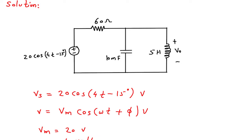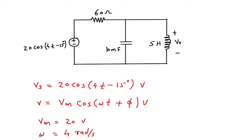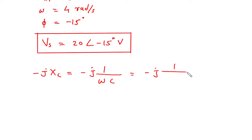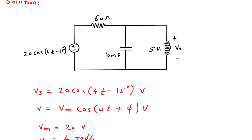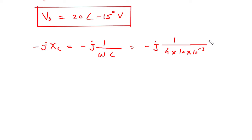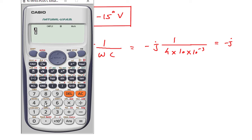Then we will convert the 10 mF capacitor into the frequency domain. This will be −jXc = −j·(1/ωC) = −j·(1/(4 × 10 × 10⁻³)). Simplifying, this gives −j25.